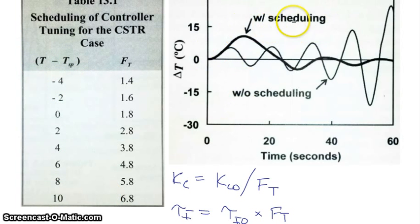Then if you do have scheduling, you might have a scenario where your response is oscillatory but dies out over time. But if you don't use scheduling and you have the wrong values of the PID tuning parameters, you may find yourself in an unstable situation.